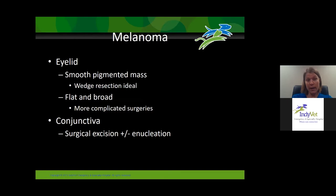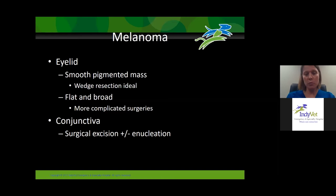Melanomas are another kind of eyelid mass we see. They tend to come in two variants: a pretty smooth, solitary pigmented mass — ideal for a wedge resection. Cryotherapy doesn't work quite as well for melanoma, so I prefer wedge resection if I'm suspecting melanoma. They can also be flat and broad, encompassing more of the eyelid margin, which is a more complicated mass to perform surgery on.